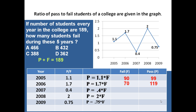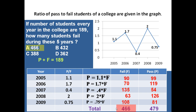For 2007, using p equals 0.4f and p plus f equals 189, fail students are 135 and pass students are 54. For 2008, p equals 2f gives fail equals 63 and pass equals 126. For 2009, fail equals 108 and pass equals 81. Adding all fail students: 90 plus 70 plus 135 plus 63 plus 108 equals 466. The answer is 466.